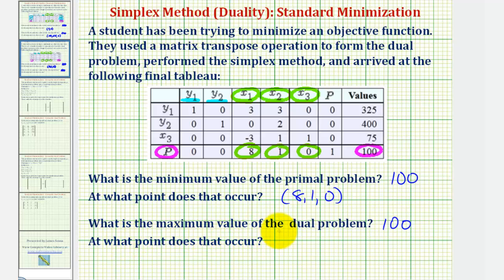And now to determine where the maximum value of the dual problem occurs, we can determine the value of the active variables from the tableau. All inactive variables are set equal to 0. And the point would be y sub 1, comma y sub 2, which notice are both active variables.